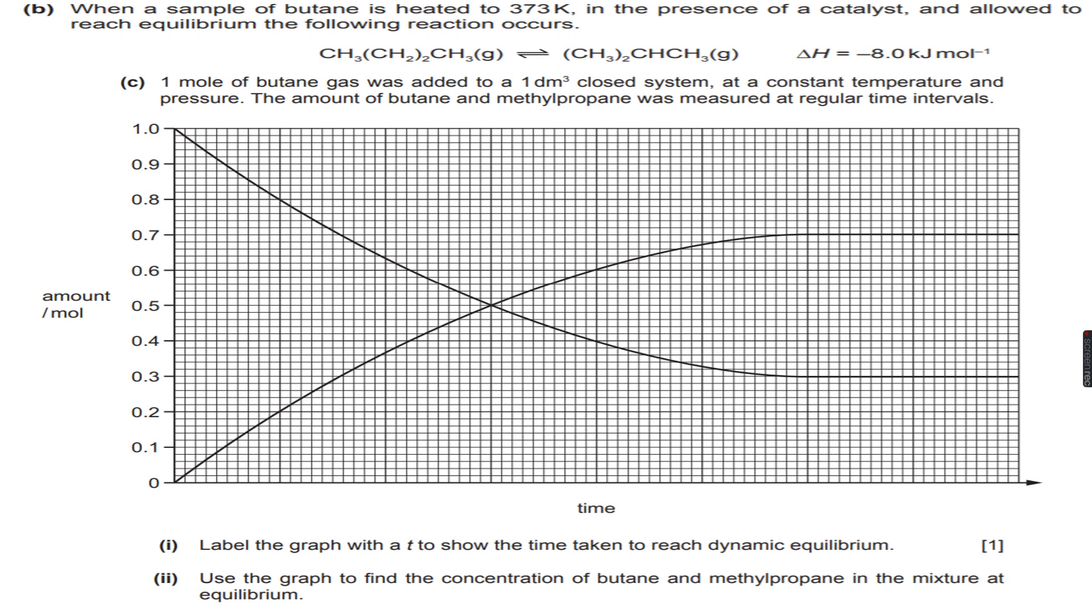As you can see, as the amount of butane which was initially 1 mole decreases, the amount of methylpropane increases. The first part says label the graph with T to show the time taken to reach dynamic equilibrium.